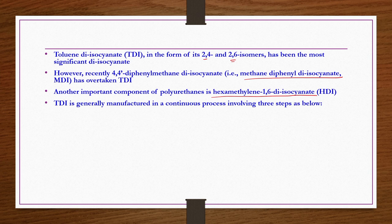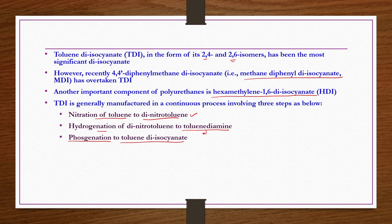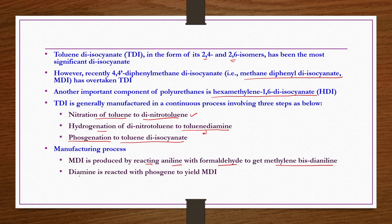TDI is manufactured in a continuous process involving three steps: first, nitration of toluene to get dinitrotoluene; second, hydrogenation of dinitrotoluene to produce toluene diamine; third, phosgenation of toluene diamine to produce TDI. For MDI manufacturing, aniline reacts with formaldehyde to get methylene bis-aniline (diamine), which then reacts with phosgene to yield MDI.